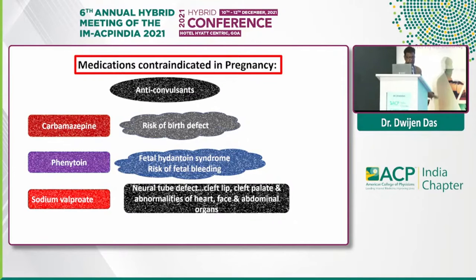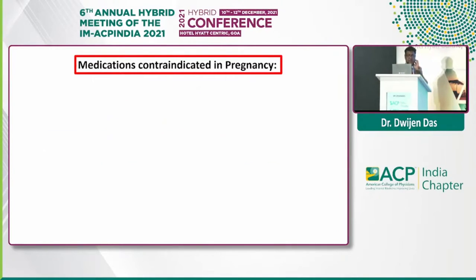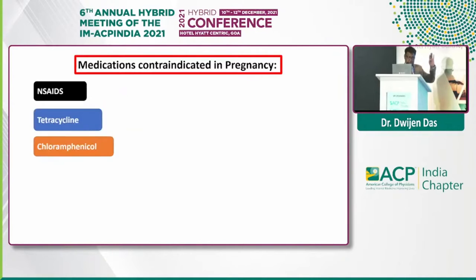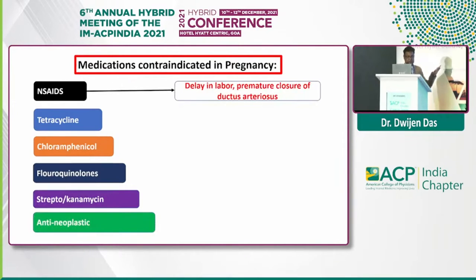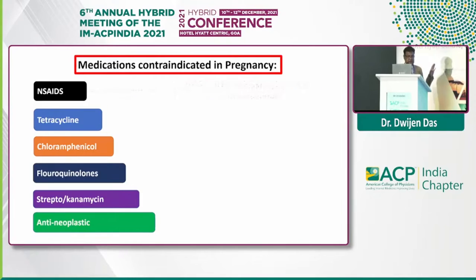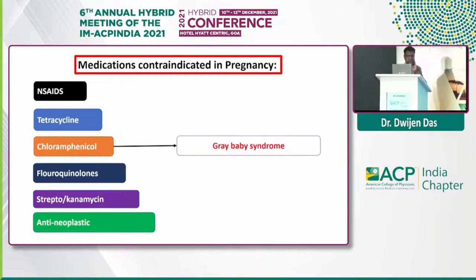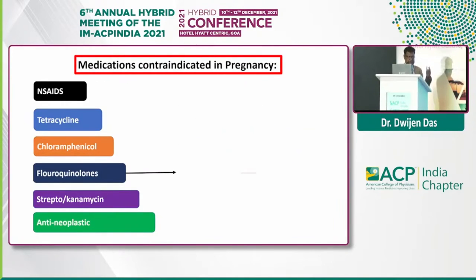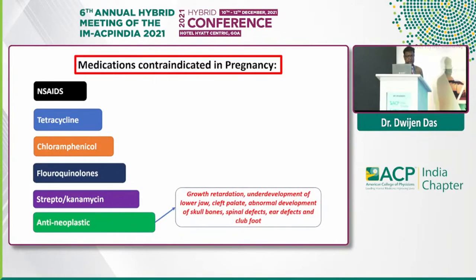As an antidepressant example, lithium is very toxic and may cause cardiac anomalies in the form of Ebstein's anomaly, hypotonia in the baby, and diabetes insipidus. There is a list of drugs contraindicated during pregnancy: NSAIDs may cause delay in labor and premature closure of the ductus arteriosus. Tetracycline may cause permanent staining of the teeth and poor bone growth in the fetus. Chloramphenicol may cause gray baby syndrome. Chloroquine and fluoroquinolones are still used sometimes but may cause fetal cartilage damage. Streptomycin and kanamycin group of drugs may cause ototoxicity. Antineoplastic drugs may cause growth retardation, underdevelopment of the lower jaw, cleft palate, and so on.